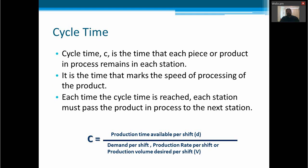There is one very important concept to balance a line. This is the cycle time. The cycle time, that we are going to call C, is the time that each piece or product in process remains in each station. It is the time that marks the speed of processing the product. Each time the cycle time is reached, each station must pass the product in process to the next station.